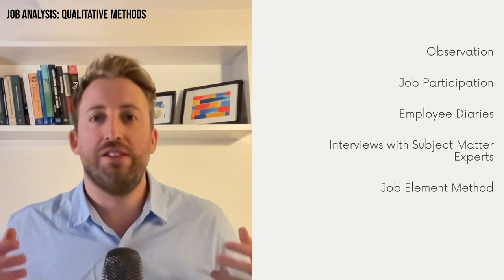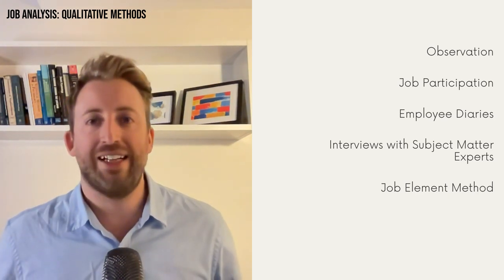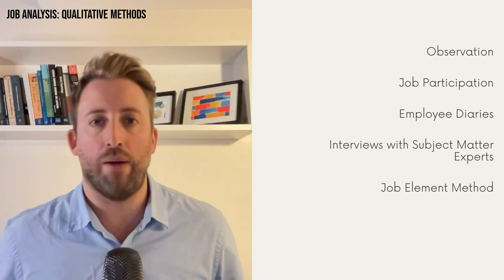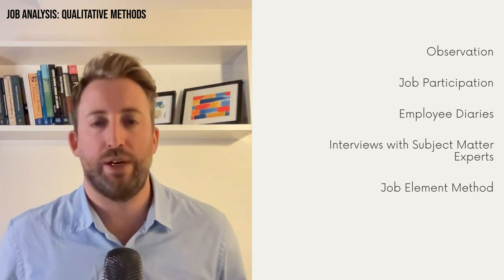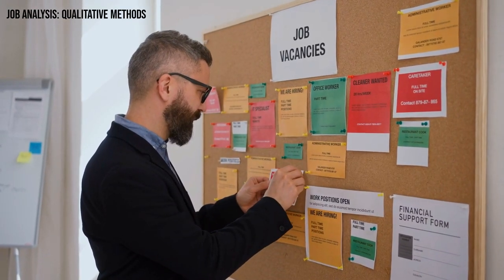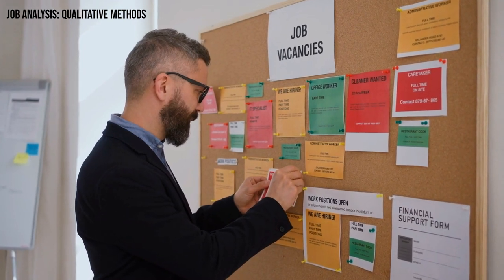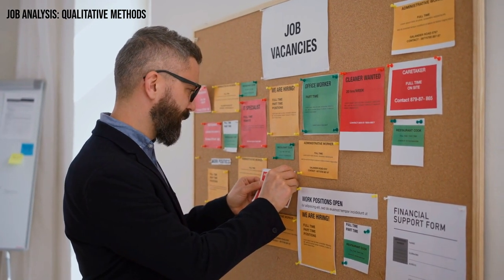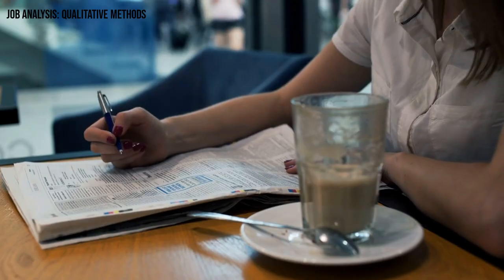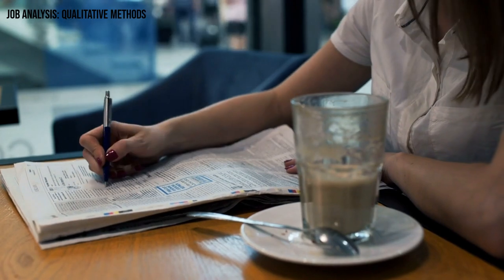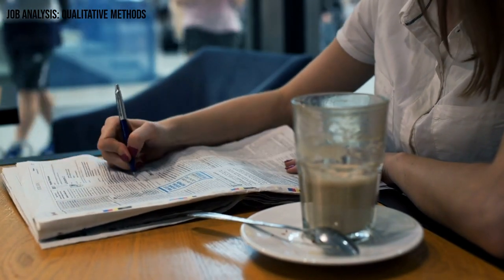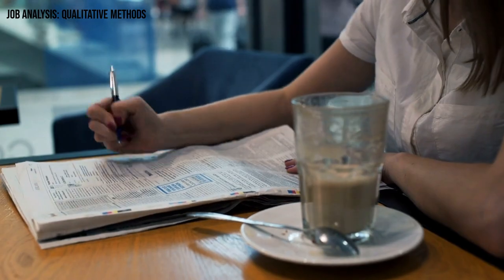The goal is to determine the type of person likely to succeed in a particular job, creating what we call a person specification. You've probably seen this in job ads — like 'we're looking for someone who communicates well, can manage a team, or is fluent in a specific language.' These are all examples of KSAs that result from a job analysis.